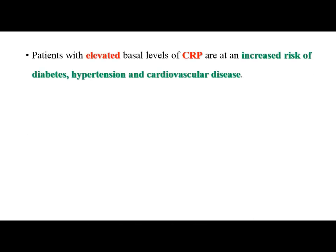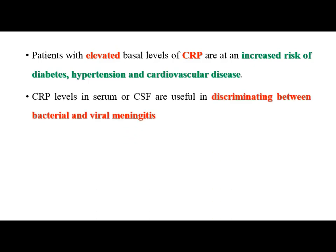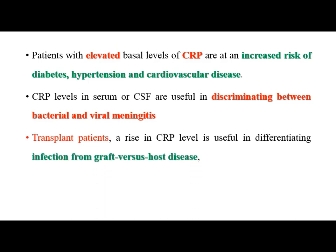CRP can also be used to assess non-infectious diseases like diabetes, hypertension, and cardiovascular disorders. Elevated basal levels of CRP increase the risk of these conditions. Estimation of CRP levels in serum or CSF is useful to discriminate between bacterial and viral meningitis, although many studies suggest CRP can be elevated in viral meningitis as well. Estimation of CRP levels in transplant patients helps in differentiating infection from graft versus host disease.